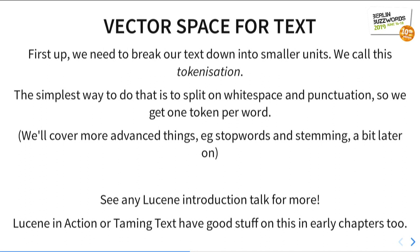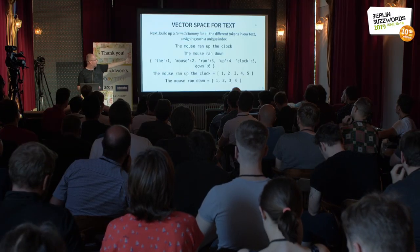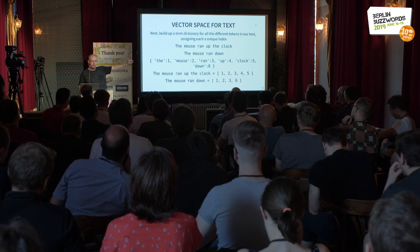We've got our text and we need a load of ones and zeros. The first thing we have to do is tokenization — turn all those sentences and paragraphs down into little chunks. The very simple way is just to split on whitespace and punctuation, breaking it down into individual words. Then we build a term dictionary — for each individual term we give it an index, a giant lookup list. So 'the mouse ran up the clock' gives terms one through five, and 'the mouse ran down' maps onto those indices with 'down' getting index six. We've gone from text to a load of term indices.